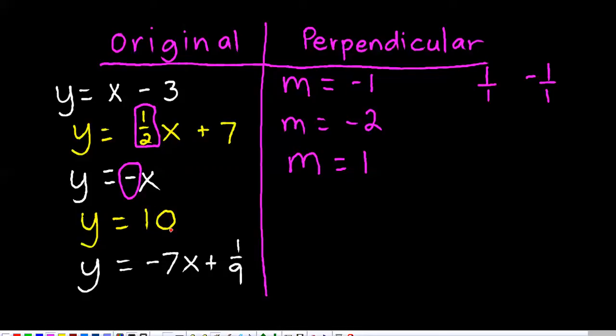This one's really tricky, y equals 10. y equals 10, or anything that's y equals a number, a constant, is a horizontal line, you know, with a slope of 0.